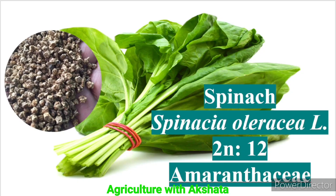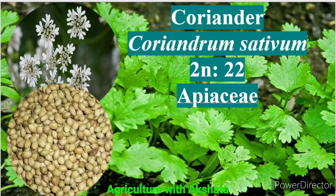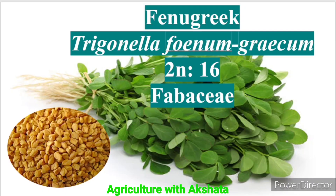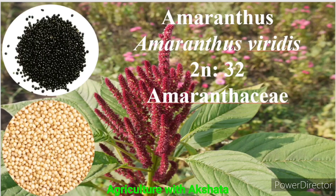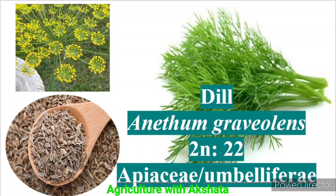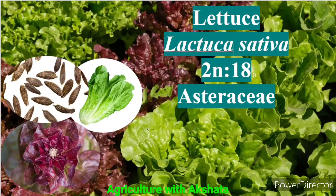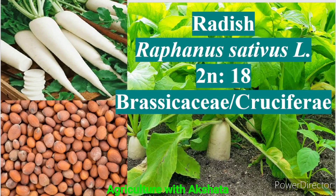Spinach: Spinacia oleracea, 2n = 12, Amaranthaceae family. Coriander: Apiaceae or Umbelliferae family. Fenugreek: Trigonella foenum-graecum, 2n = 16, Fabaceae family. Amaranthus: Amaranthus viridis, 2n = 32, Amaranthaceae family. Dill: Anethum graveolens, 2n = 22, Apiaceae or Umbelliferae family. Lettuce: Lactuca sativa, 2n = 18, Asteraceae or Compositae family.